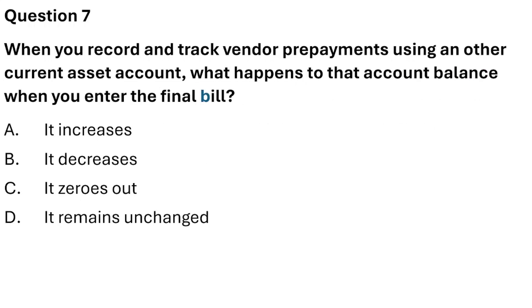Question 7: When you track vendor prepayments using the other current assets account, what happens to that account balance when you enter the final bill? The correct answer is Option B — it decreases.